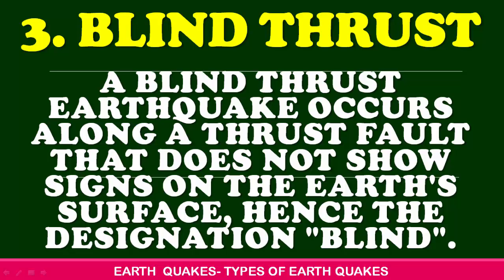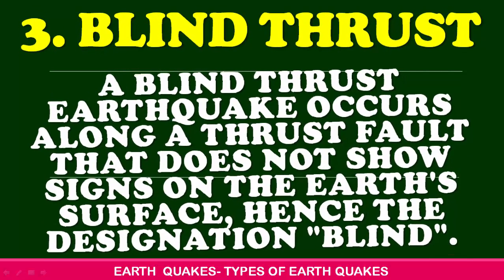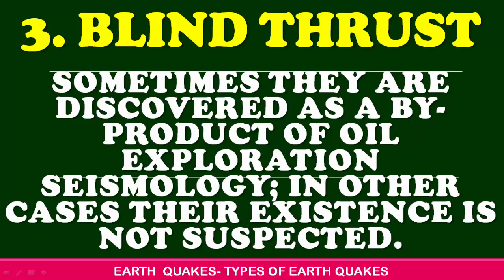3. Blind Thrust: A blind thrust earthquake occurs along a thrust fault that doesn't show signs on the earth's surface, hence the designation 'blind.' Sometimes they are discovered as a by-product of oil exploration seismology; in other cases, their existence is not suspected.